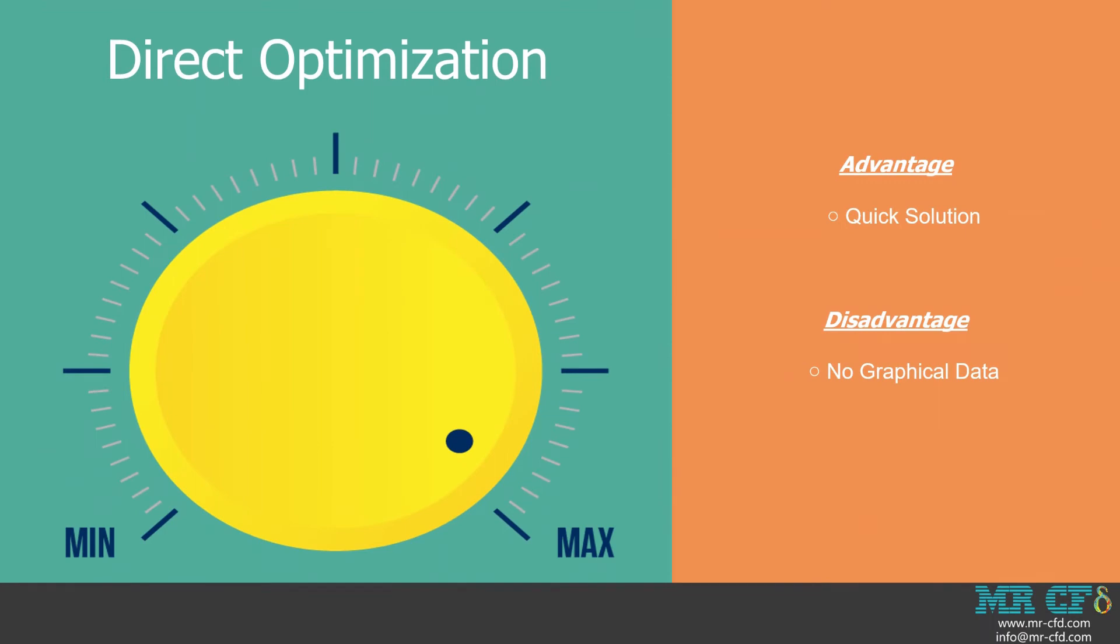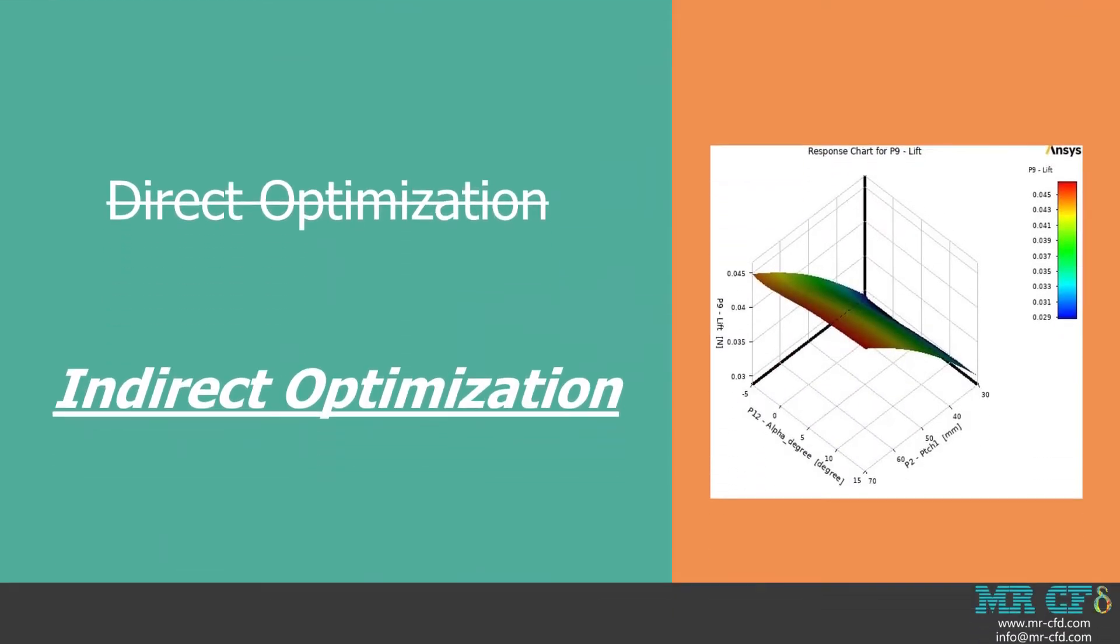Direct method can be used to obtain the optimized solution quickly. However, no explicit intermediary or graphical data can be extracted for the effect of single or multiple parameters on the defined targets. In this case, the indirect optimization method can be helpful.